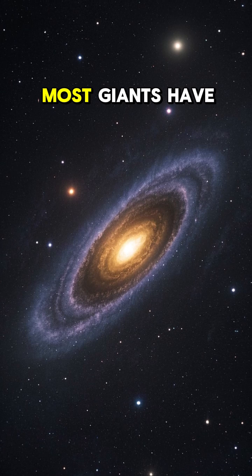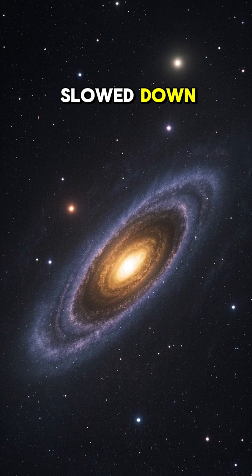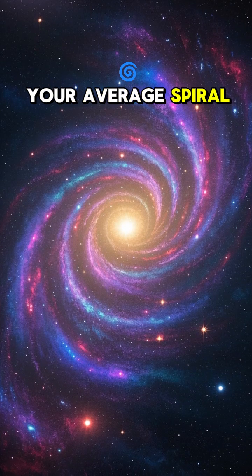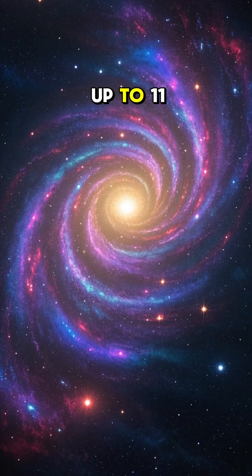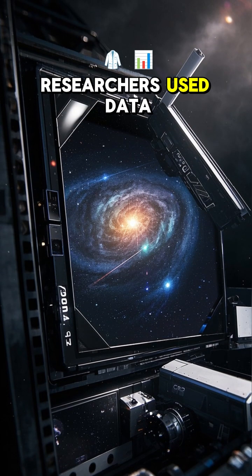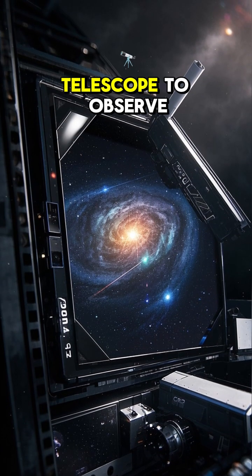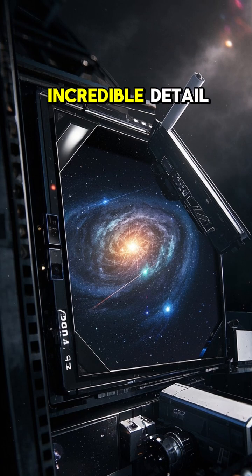And that's in a universe where most giants have slowed down. These are not your average spiral galaxies, more like spiral galaxies turned up to 11. Researchers use data from the James Webb Space Telescope to observe these galaxies in incredible detail.